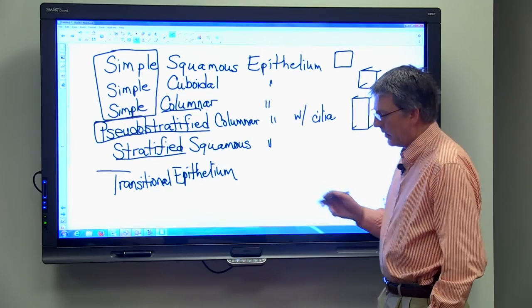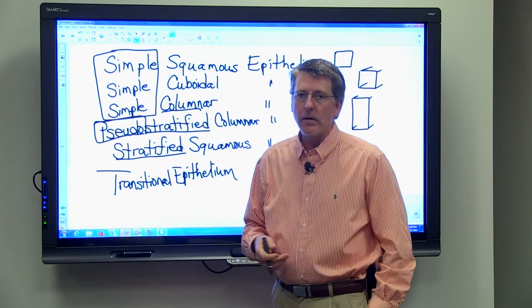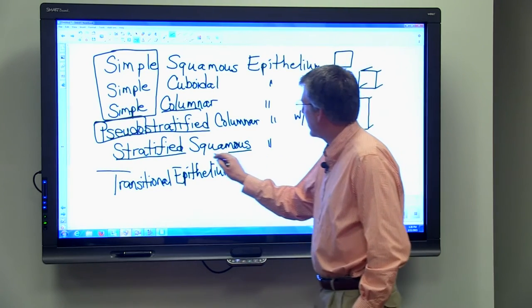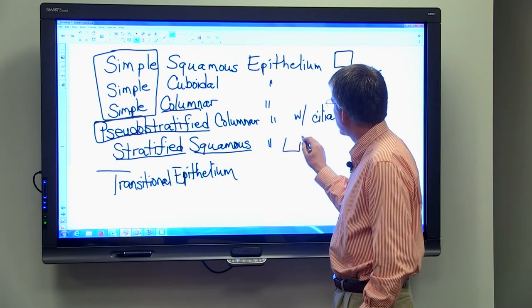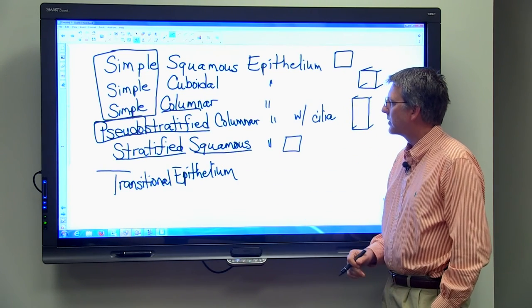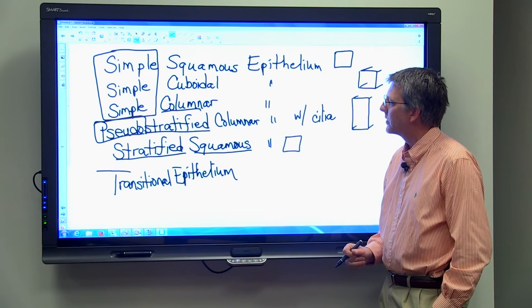Squamous, again, think about the square cells, but again, they're layered, and transitional is a little different. We'll look at that in just a second.